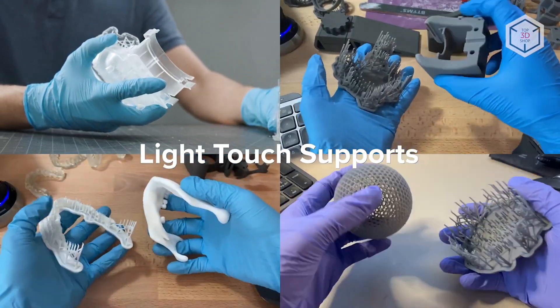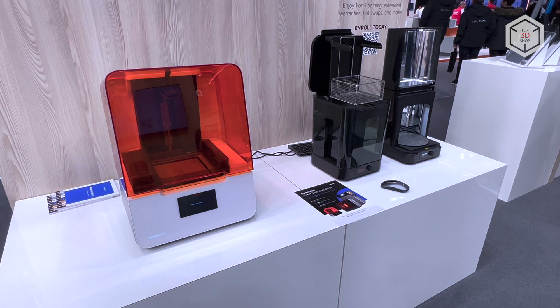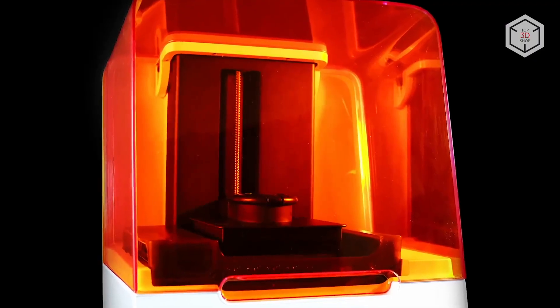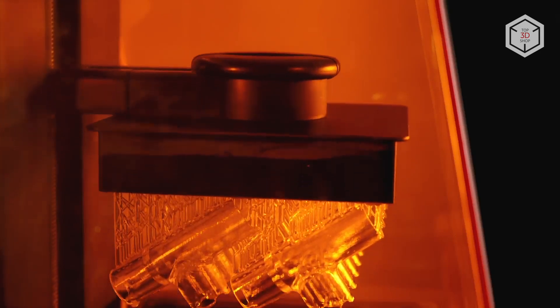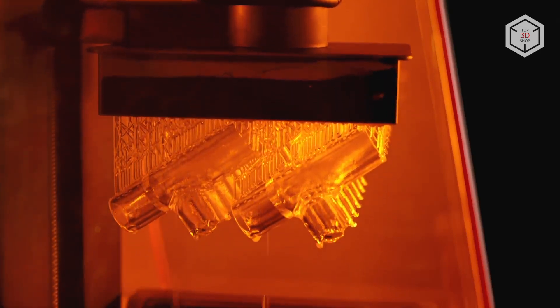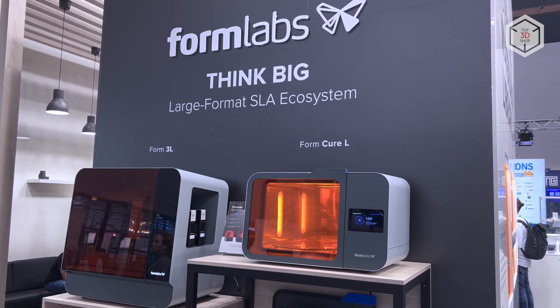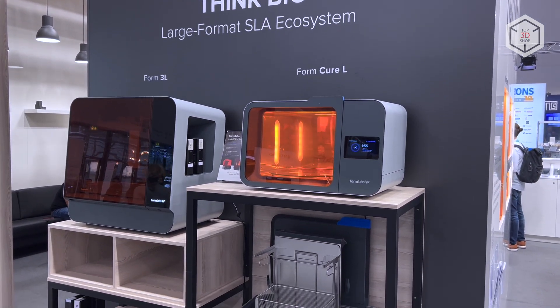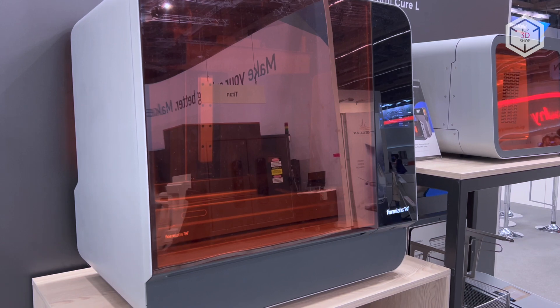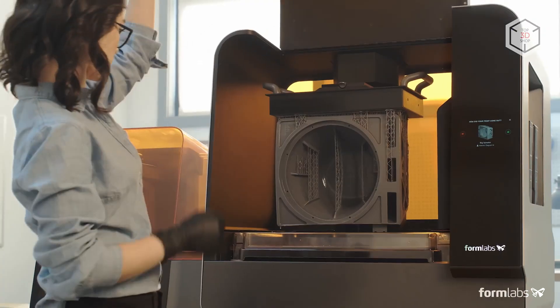Form 3D Plus is a modification of the previous model designed specifically for medical applications. The printer is ready for use with all Formlabs resins, including biocompatible ones. Form 3L and 3BL in turn are large-sized versions of basic models equipped with two lasers. They are the most productive SLA printers in the Formlabs lineup with build chamber dimensions of 335 by 200 by 300 millimeters.